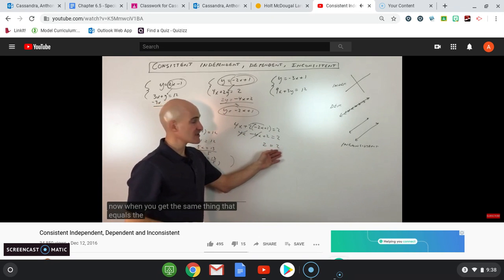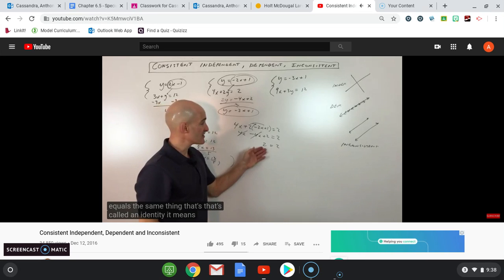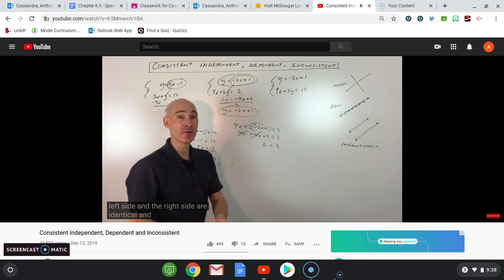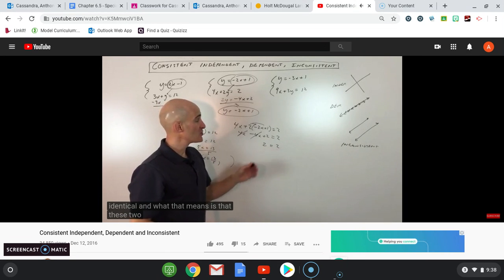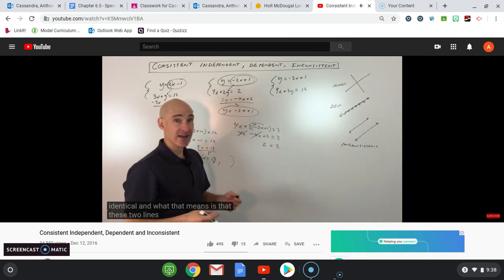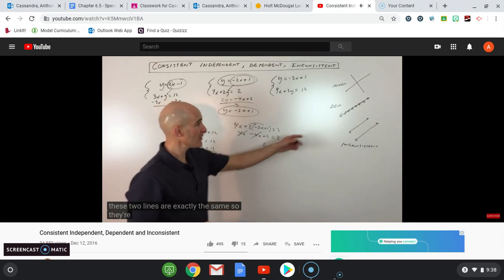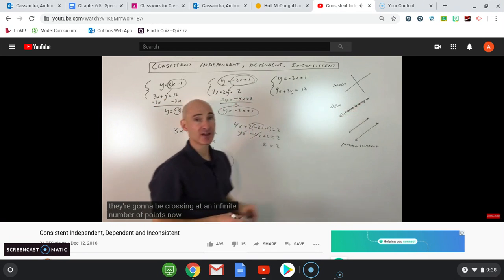We get 2 equals 2. When you get the same thing that equals the same thing, that's called an identity — the left side and the right side are identical. That means the two lines are exactly the same and are going to be crossing at an infinite number of points.